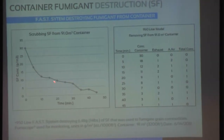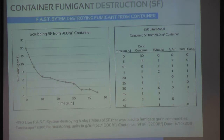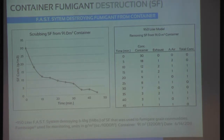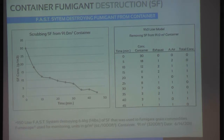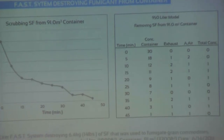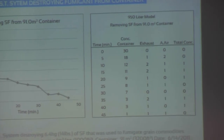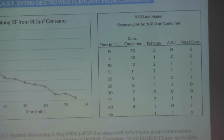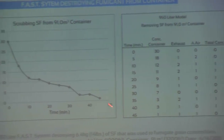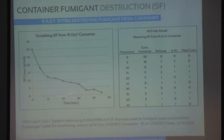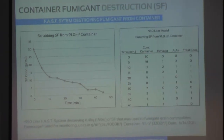One thing you might notice is that it does take a little bit longer to get that extra five or so units of fumigant out of there. That has a lot to do with desorption of the fumigant from the commodity. Logs will really absorb a lot of gas, and the off-gassing process means it's still off-gassing, so we still try to get as much as we can from the degassing of the commodities.